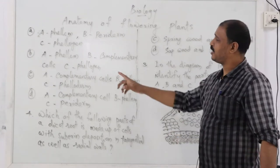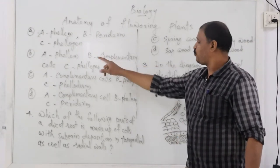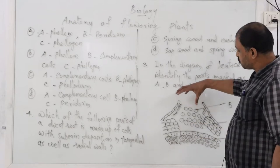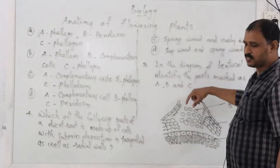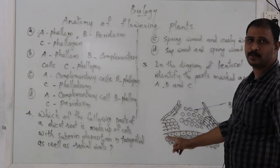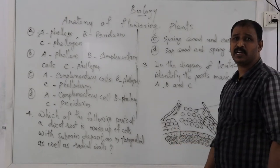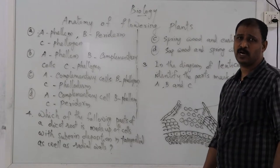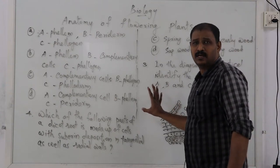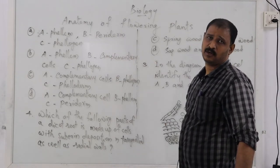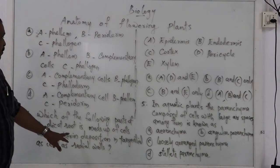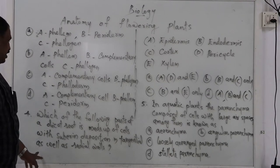The correct option is B: A — Phellum, B — Complementary loosely packed cells just inside the opening of the lenticel, and C — Phellogen, which is the layer of dividing cells.